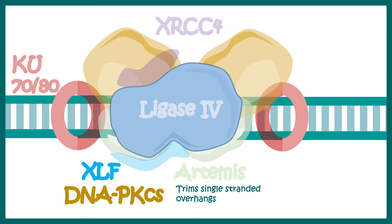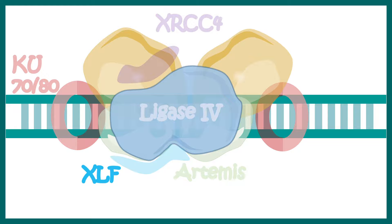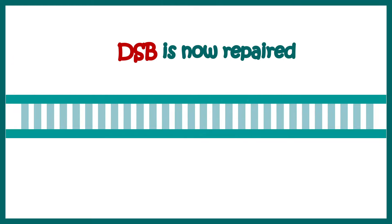Later on there is recruitment of Ligase 4 and other components such as XRCC4, XLF, etc. This entire complex leads to fixation of the double-stranded DNA break. Ultimately the double-stranded DNA break is fixed and all these molecules are dissociated from the broken DNA site. This is how NHEJ works.